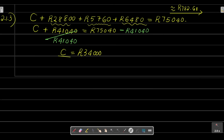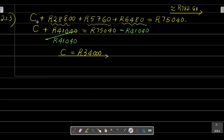This question is straightforward — just add all values including C to set up the equation, simplify by collecting the known terms, then isolate C by subtracting that sum from both sides. Because it was addition, the inverse operation is subtraction, and we get C = R34,000.